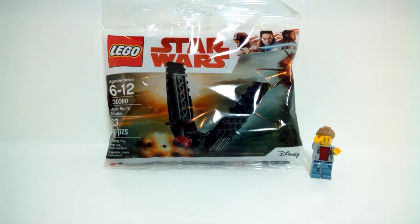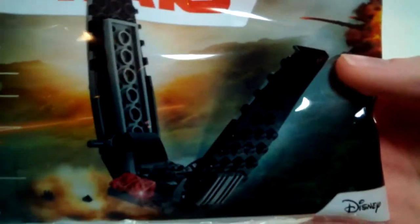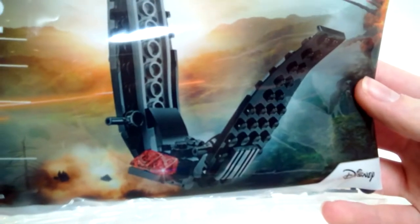This is Kylo Ren's shuttle. It is set number 30380, comes with 33 pieces and is recommended for ages 6-12. This is actually the second mini Kylo Ren's command shuttle that Lego has made. Here you can see the set details again and you got the Last Jedi toy logo and that's what the set is going to look like when built, and you got that Disney logo.